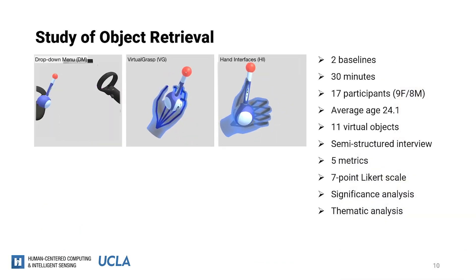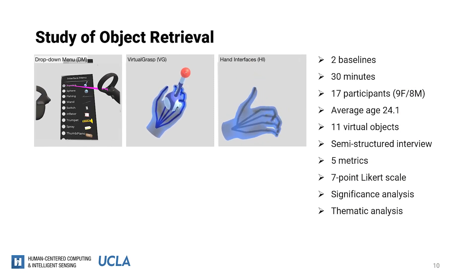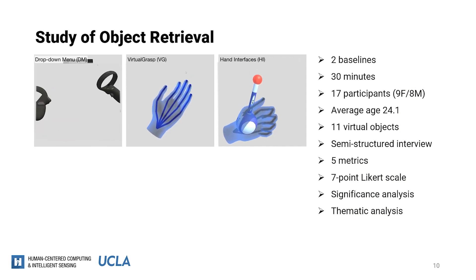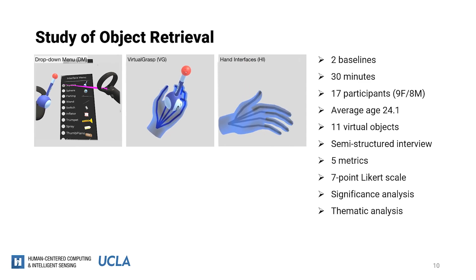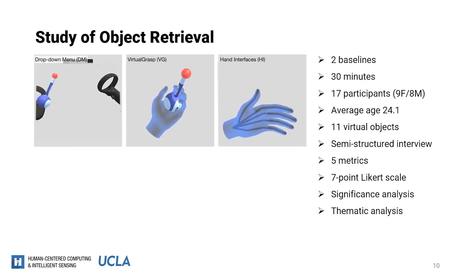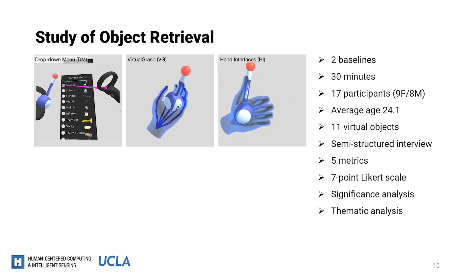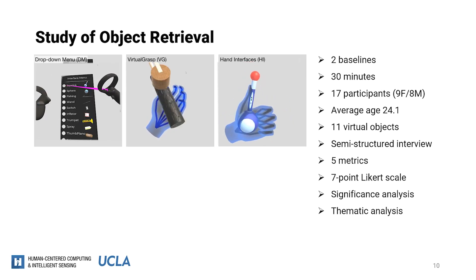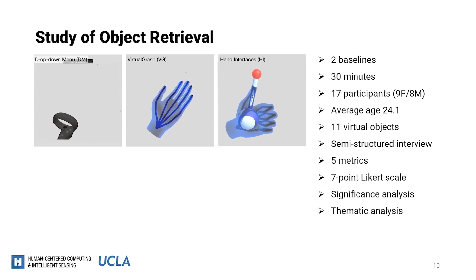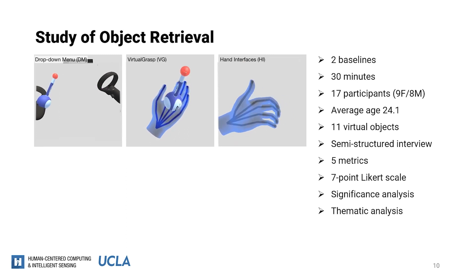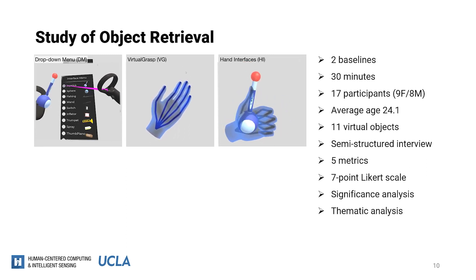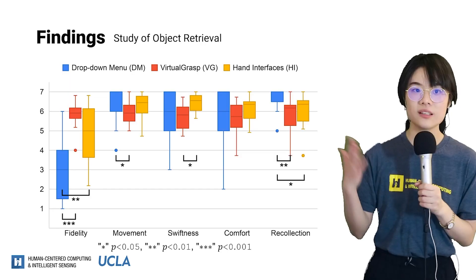Now let me talk about our evaluation and findings. Overall, we ran two studies: one for object retrieval and the other for interactive control. For object retrieval, we have two baselines: a drop-down menu, commonly used for controller-based object retrieval in AR and VR apps, and a grasping gesture to retrieve virtual objects. After all interaction techniques, we conducted a semi-structured interview on five metrics rated on a 7-point Likert scale. We analyzed quantitative data using significance analysis and ran a thematic analysis with participant quotes.